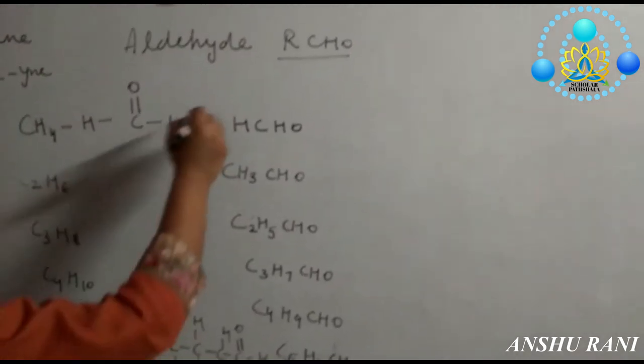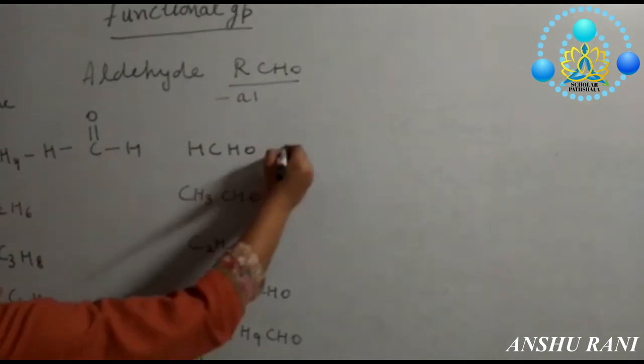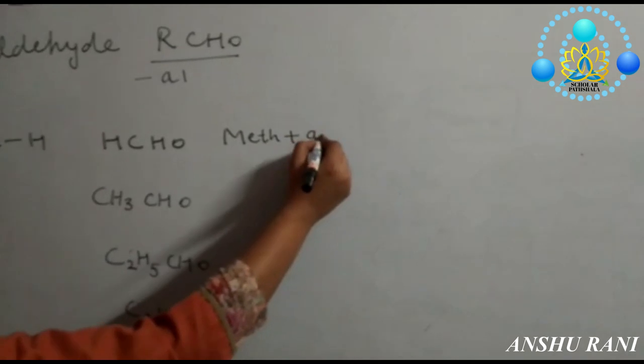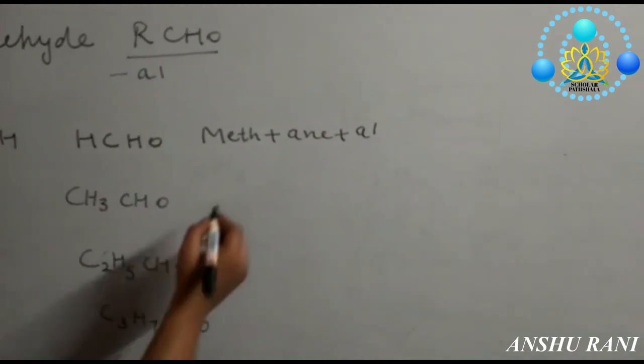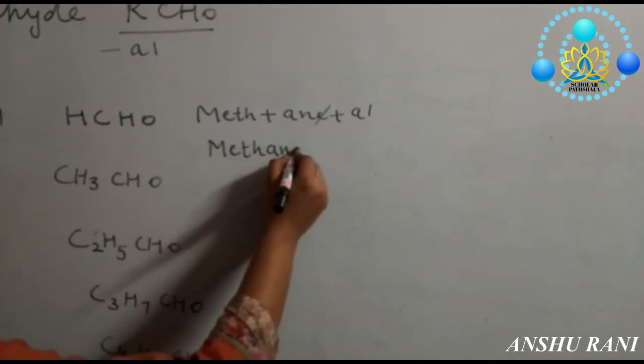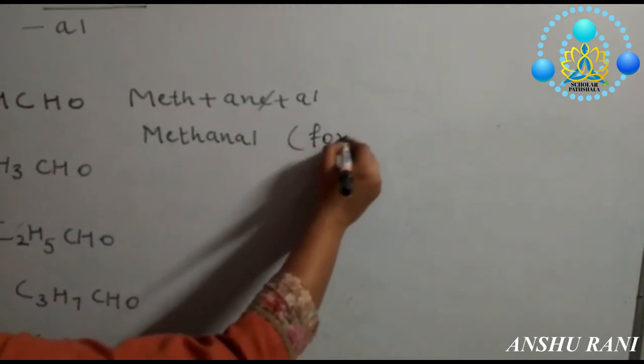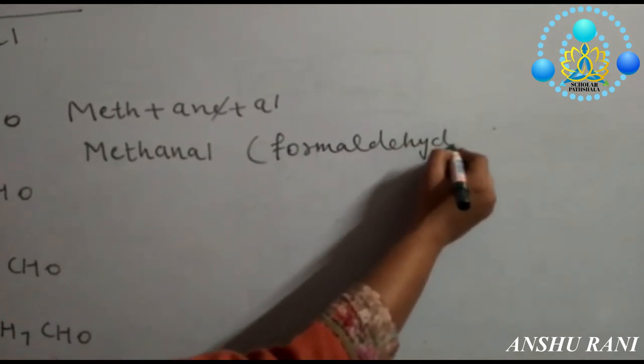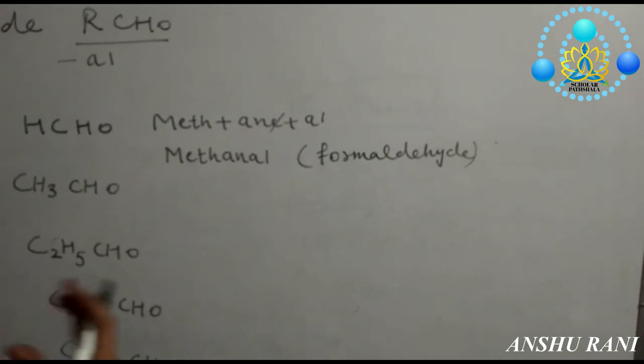So suffix used is -al. How to write the name? It is meth plus ane plus al. Now it is again starting with a vowel, its name is methanal. Methanal is commonly called as formaldehyde. It is used in biology lab for preservation of specimens.